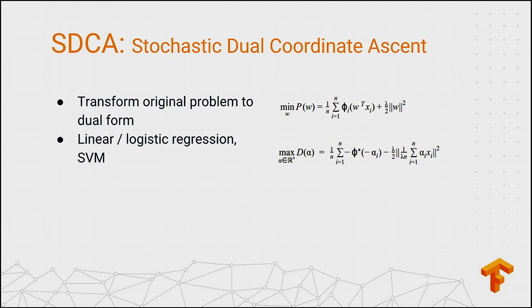Next, we have SDCA. Here you have a convex loss function with L1 and L2 regularization, and SDCA uses a neat trick of transforming this loss function into a dual form. It turns out that for many problems, solving it in dual form is much more efficient. This algorithm can power models from linear and logistic regression all the way to SVMs.